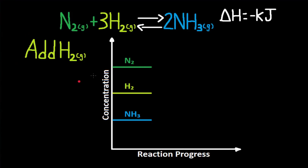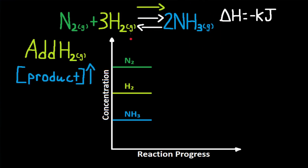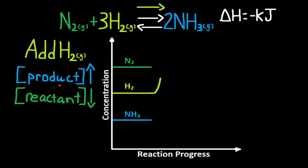If H2 is added to this reaction, describe the effect on the graph. Adding H2 causes a shift right. A shift right points at the products, so the products increase, and it doesn't point at the reactants, so the reactants decrease. To graph it: H2 is added so H2 increases first, then H2 is a reactant and reactants decrease, so H2 decreases.